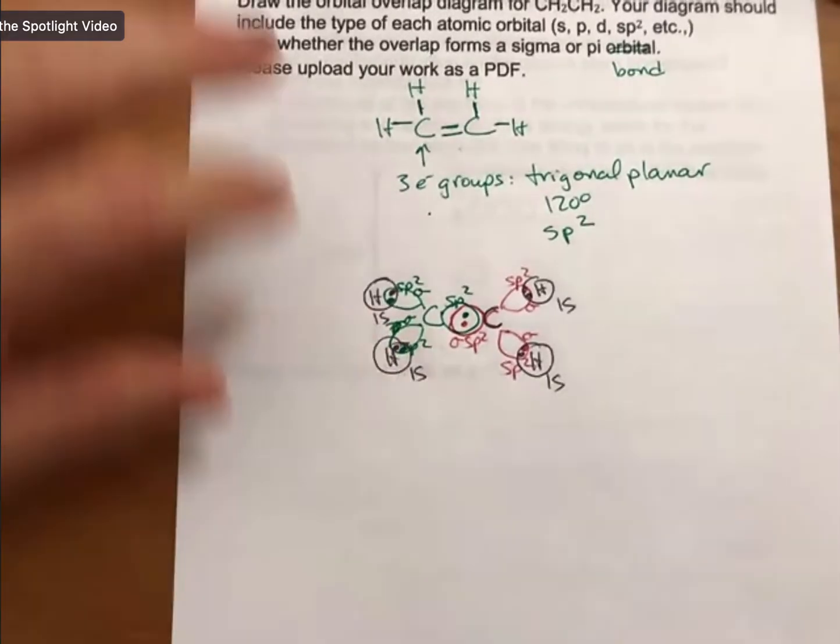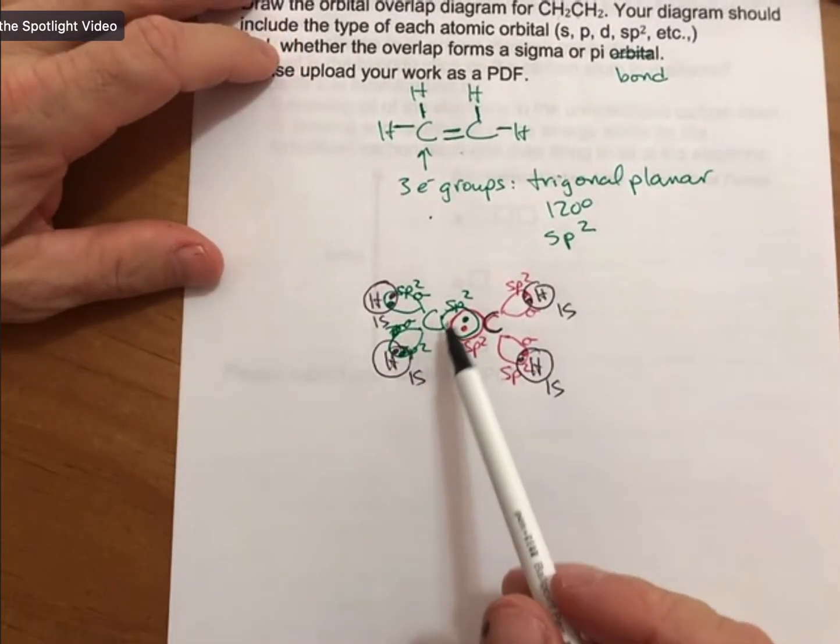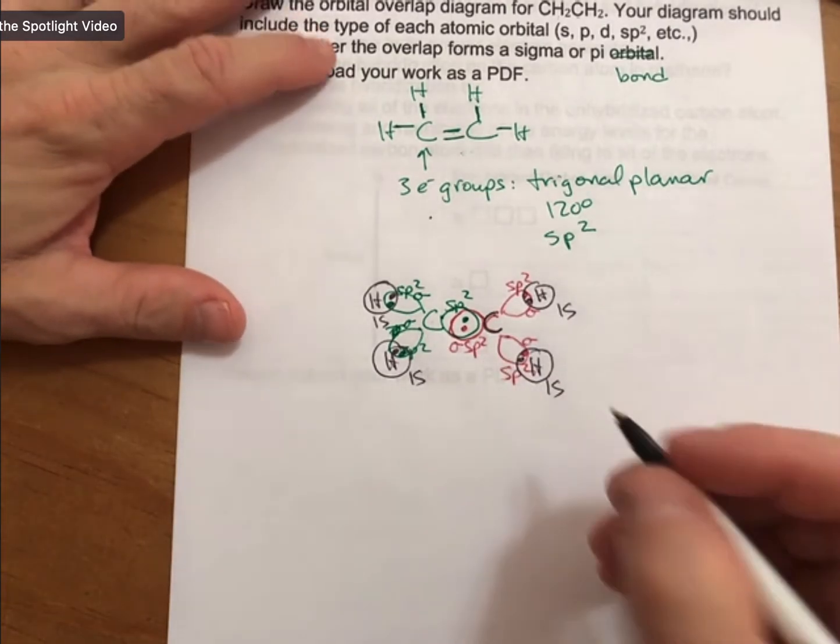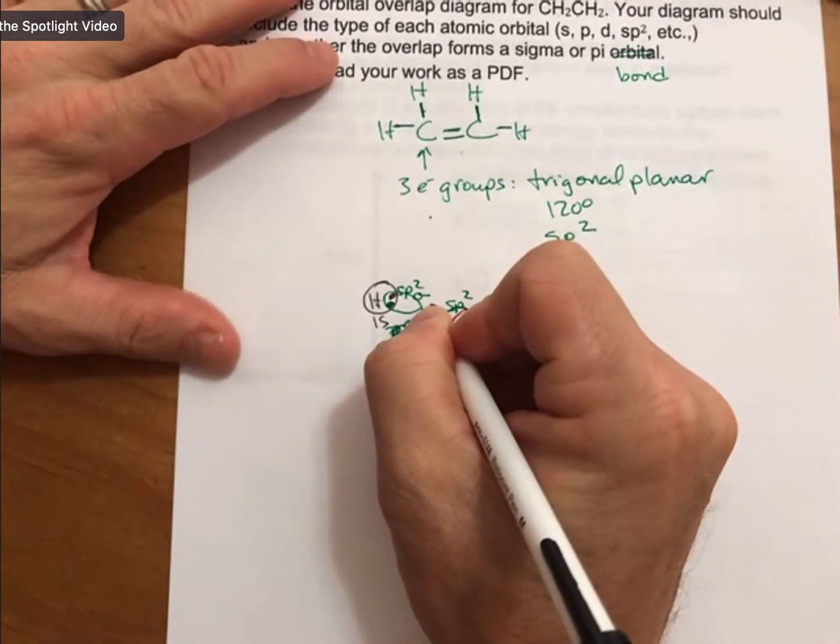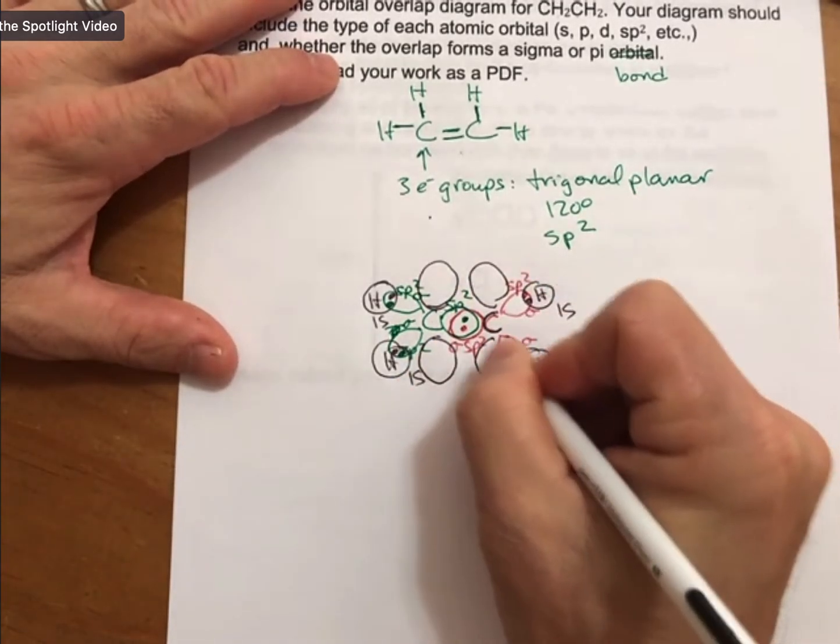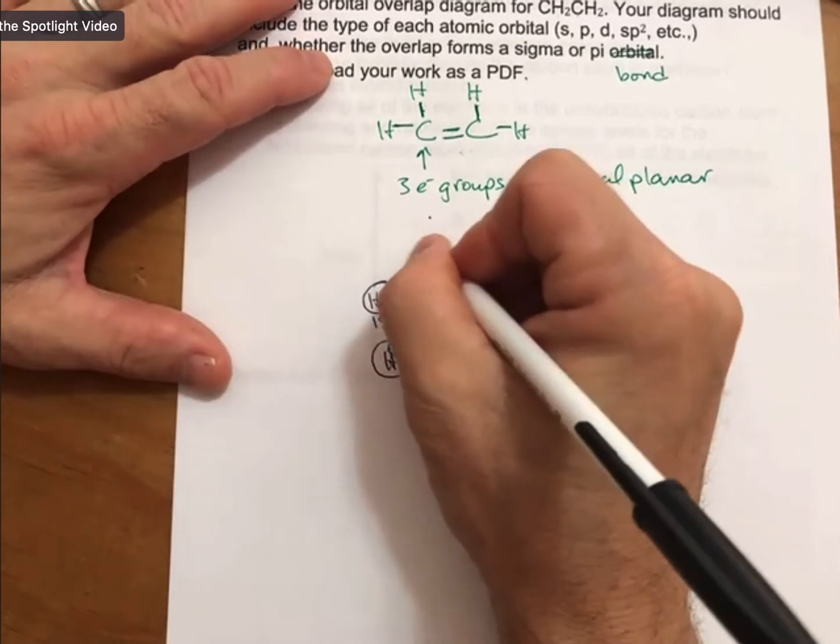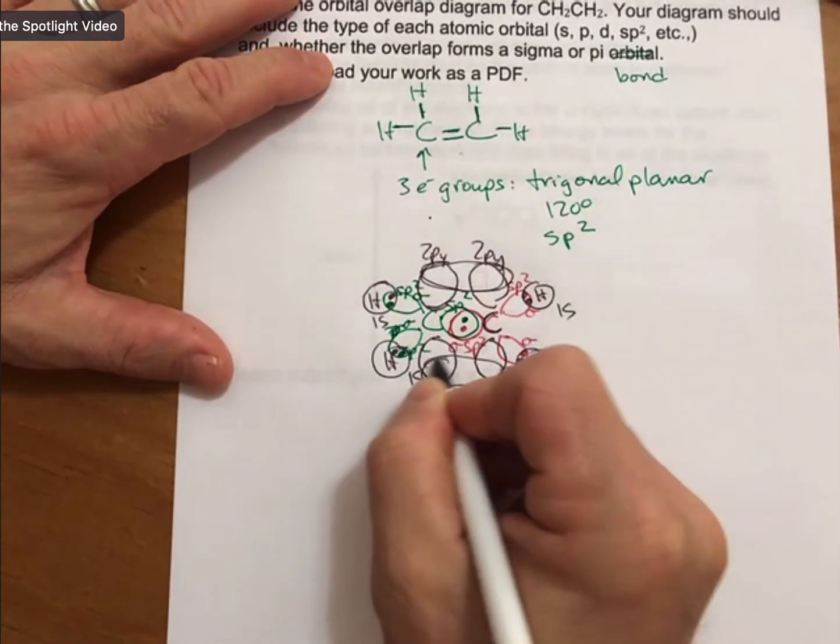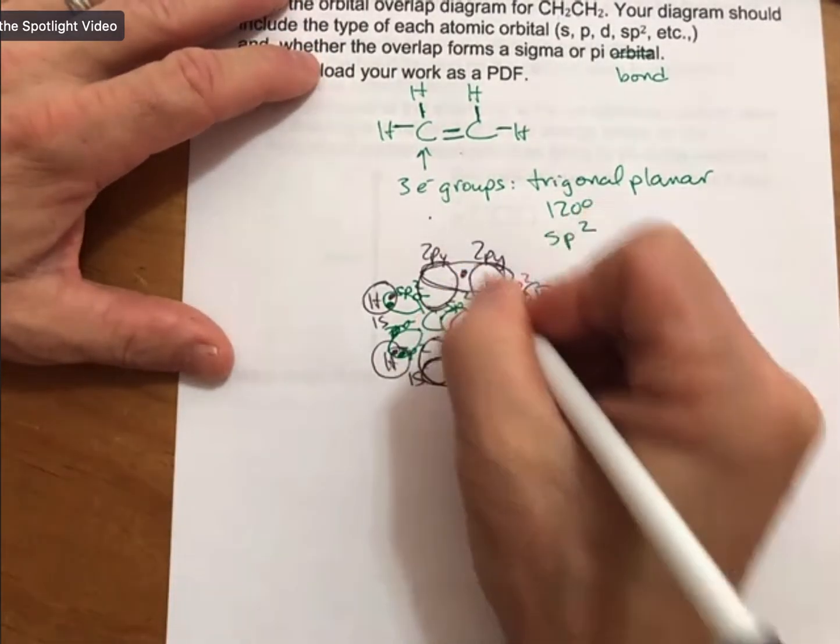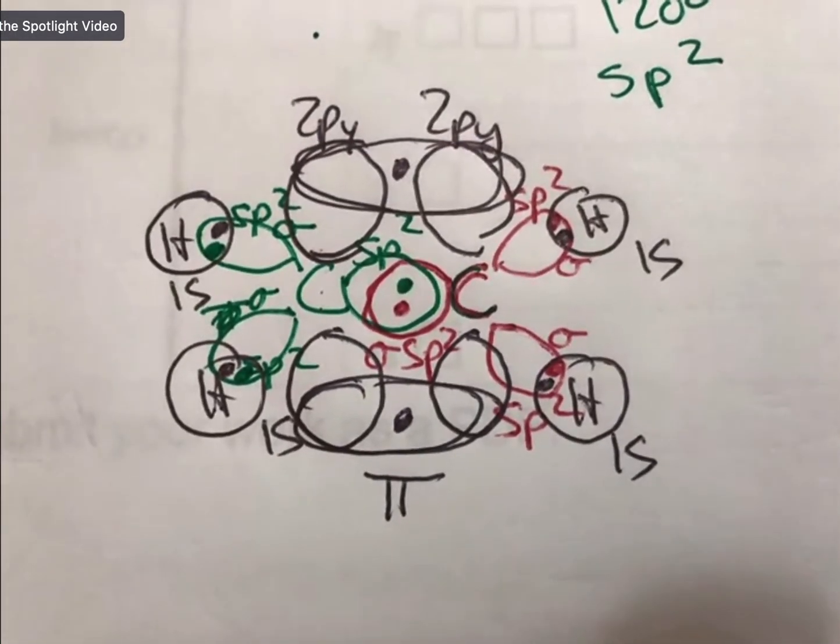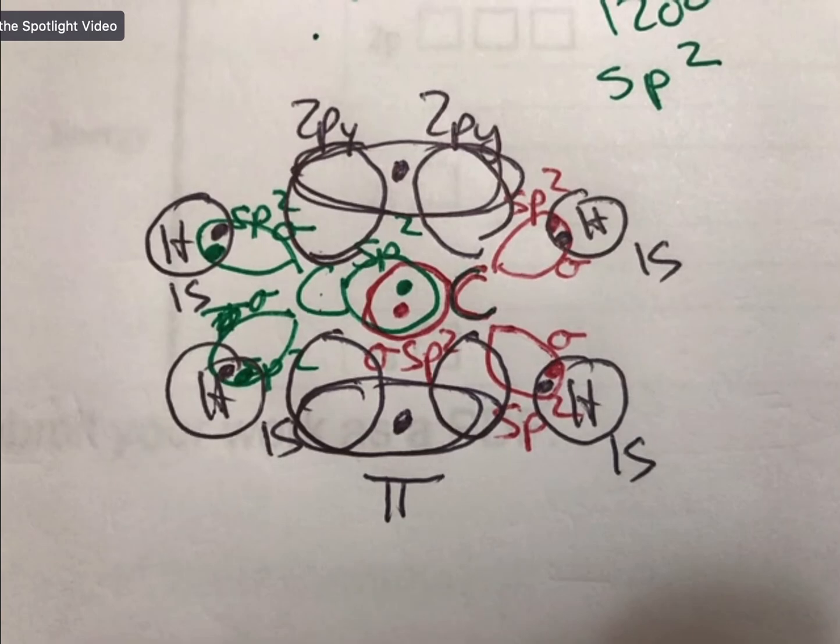Give myself a little elbow room here to draw it. So, the pi bond is going to be above and below, and I'm just going to draw that in a different color. Here's 2PY again, 2PY. They do actually overlap. And there's your pi bond. And now, I'll zoom in again. It's kind of messy, isn't it? I did my best. Thank you.